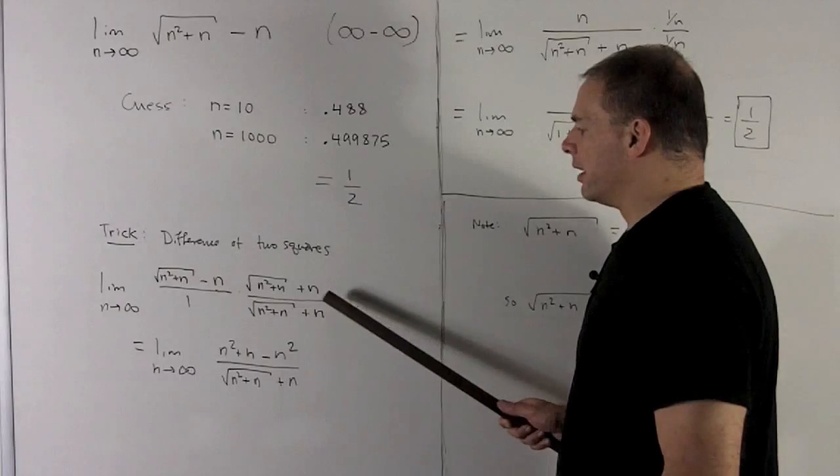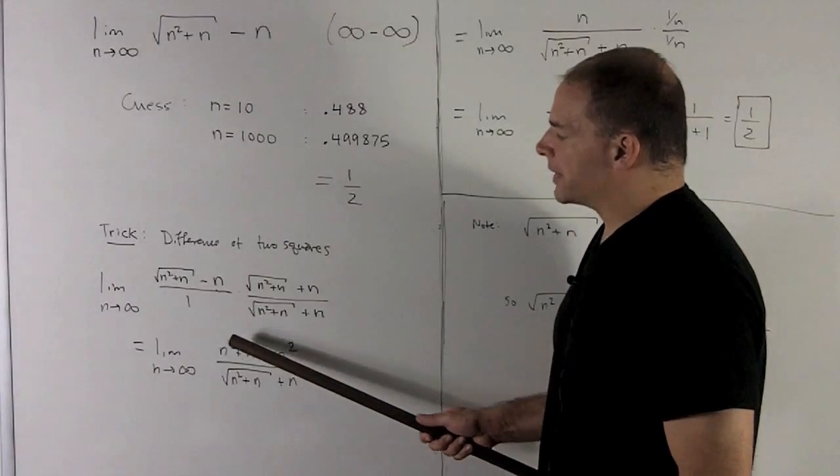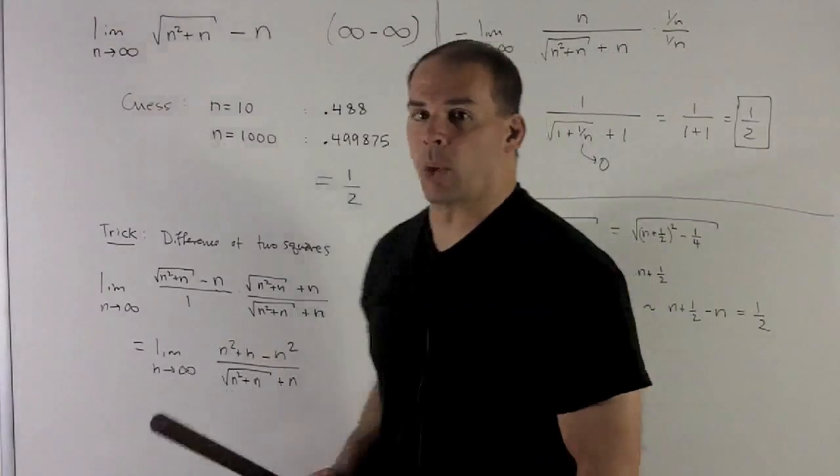Then the bottom, we're going to have this expression with the plus sign. Well, up top, the n squareds are going to disappear and they're just going to leave me with an n. So this we can work with.